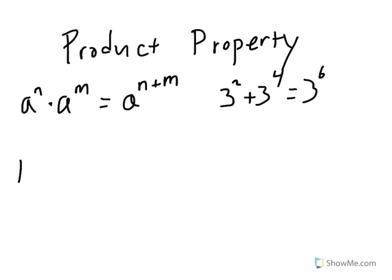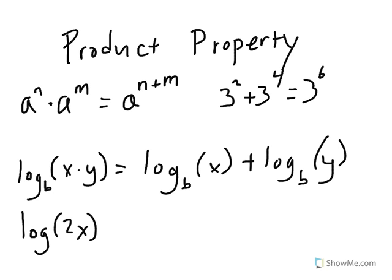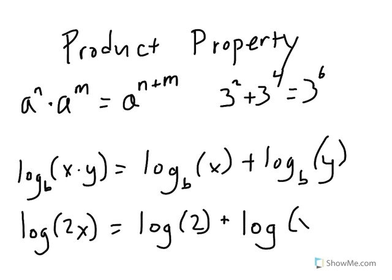In logarithms, the product property says the log base b of x times y is equal to the log base b of x plus the log base b of y. With numbers, this would look something like the log of 2x is equal to the log of 2 plus the log of x. And that's the product property.